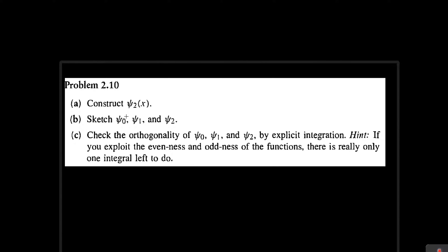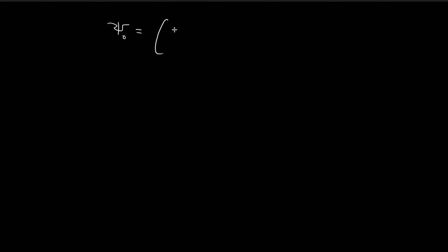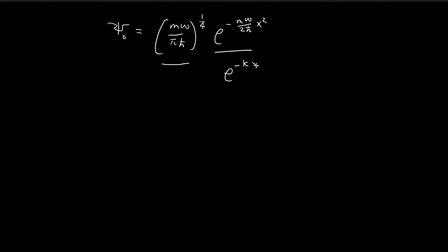In part b of this problem, we need to graph the three stationary states. Let's start off with psi naught. In the example in the book, we've proven that psi naught is equal to this expression. You have all these constants multiplied by this negative e term. This term is essentially e to the power of negative some constant times x squared, and these symbols are all constants.